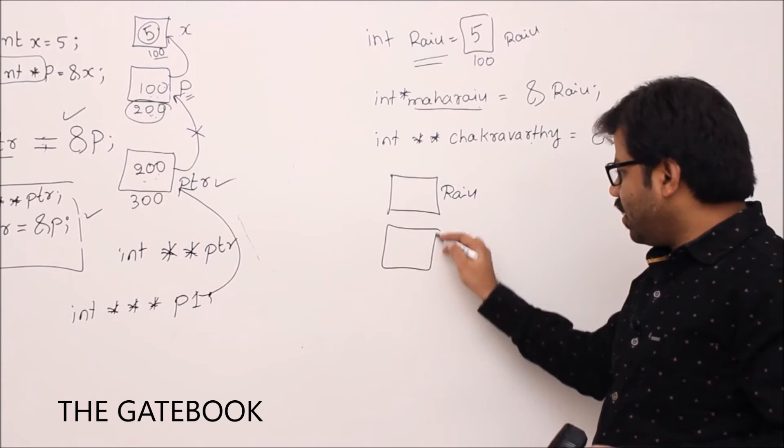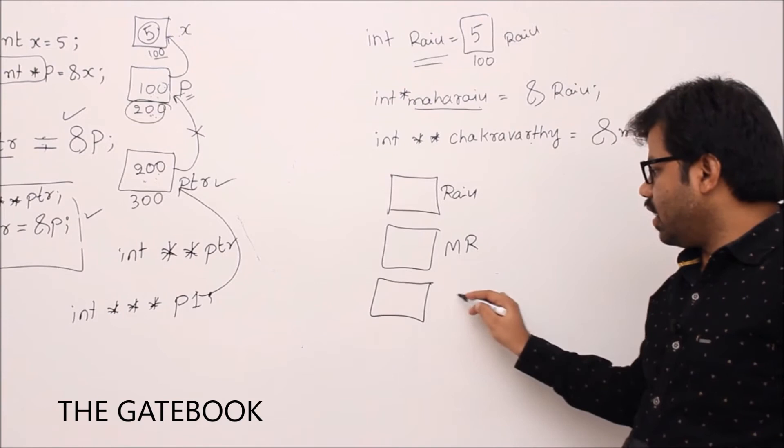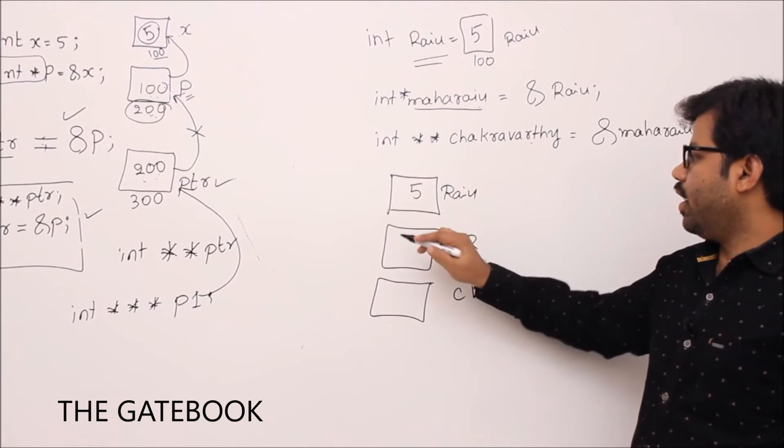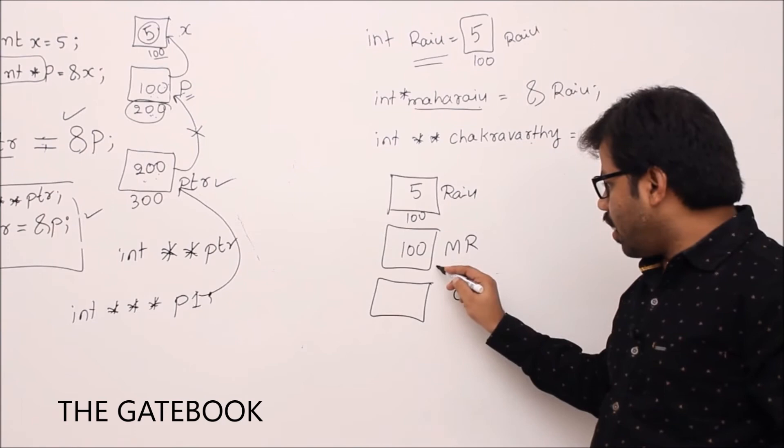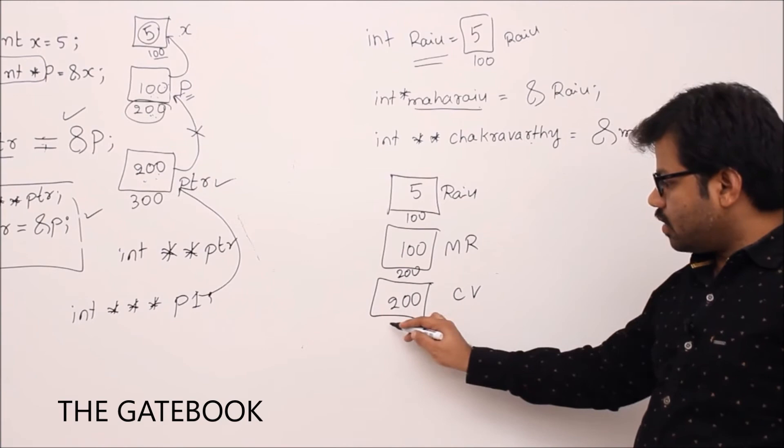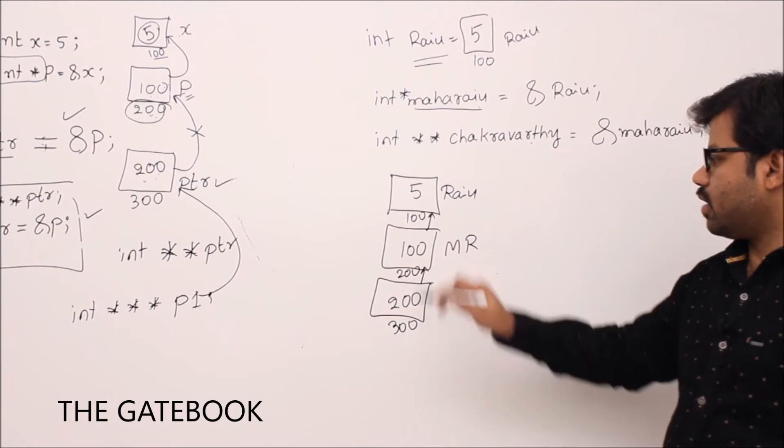Let's use shortcuts: Raju is here, Maharaju is MR, Chakravarti is CB. Because of all these connections: Raju's value is 5, memory address is 100. Maharaju gets address of Raju, which is 100. Chakravarti holds address of Maharaju — let's say that is 200 — so content of CB is 200. Address of CB is 300. Logically, it's like there are mappings and links between all three.